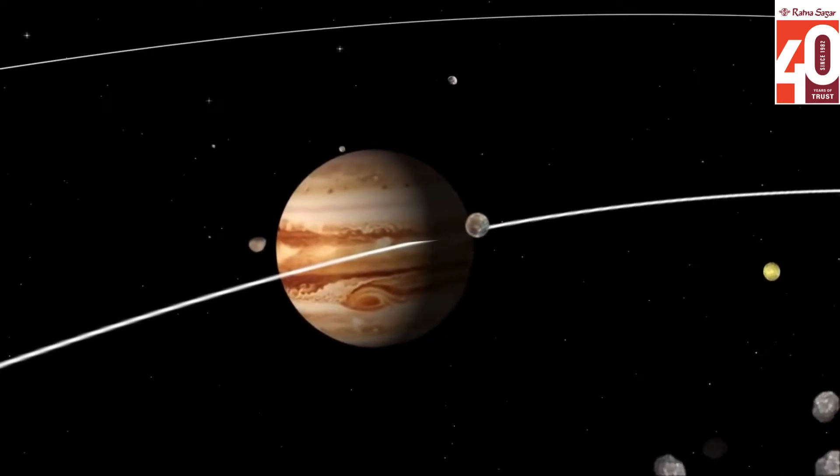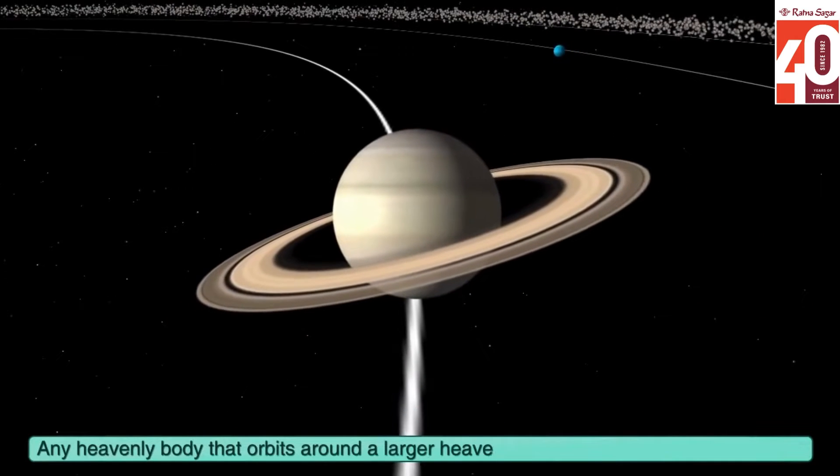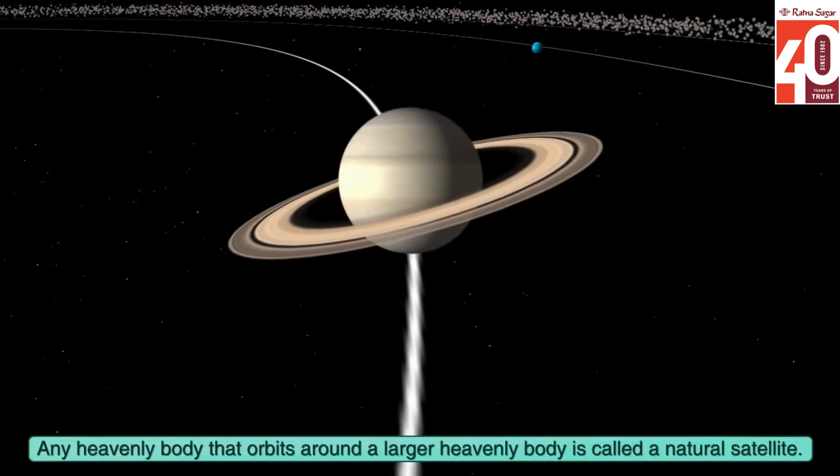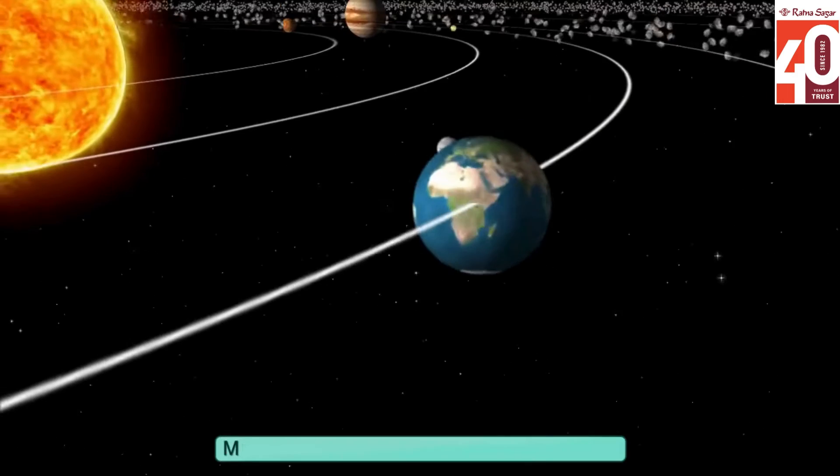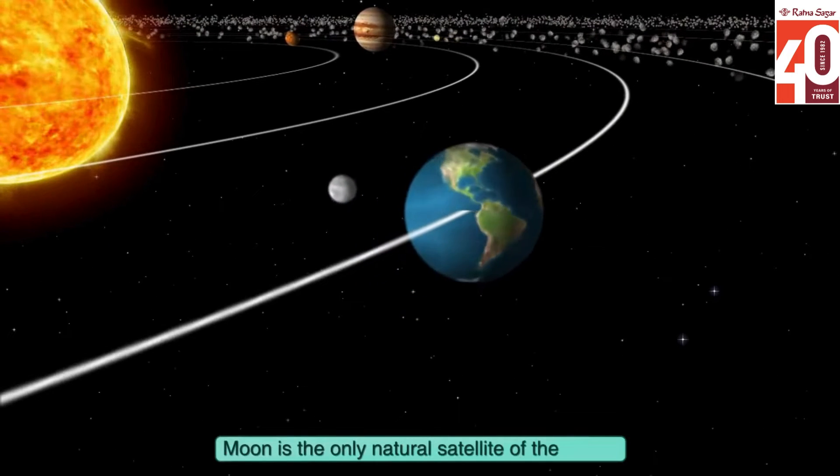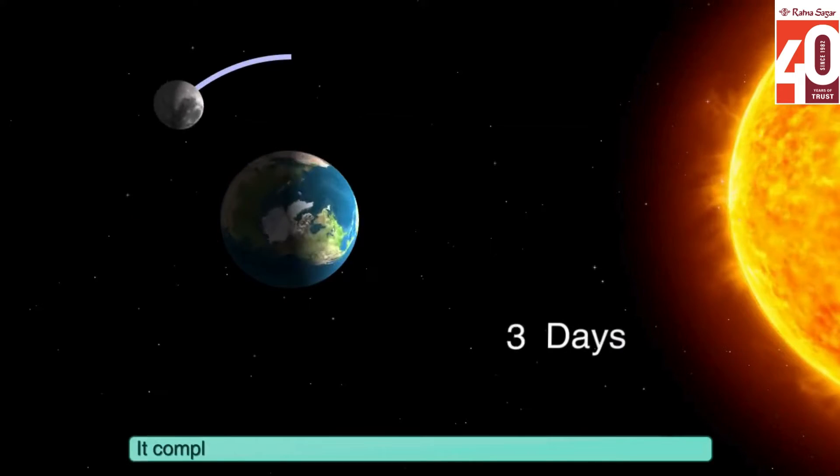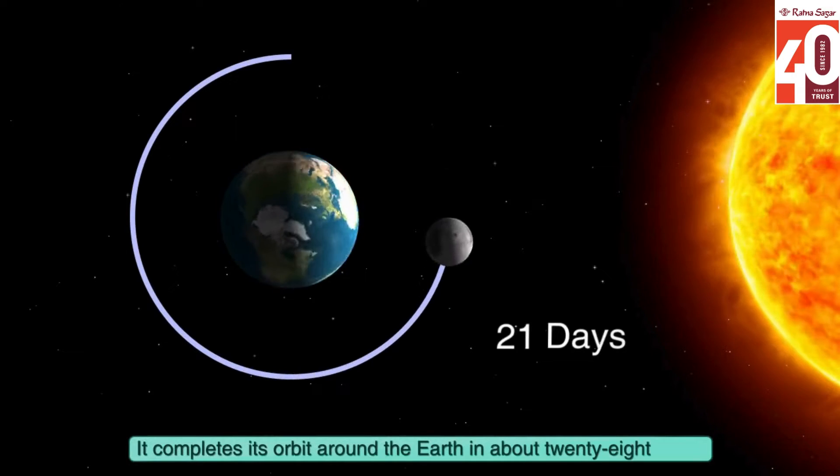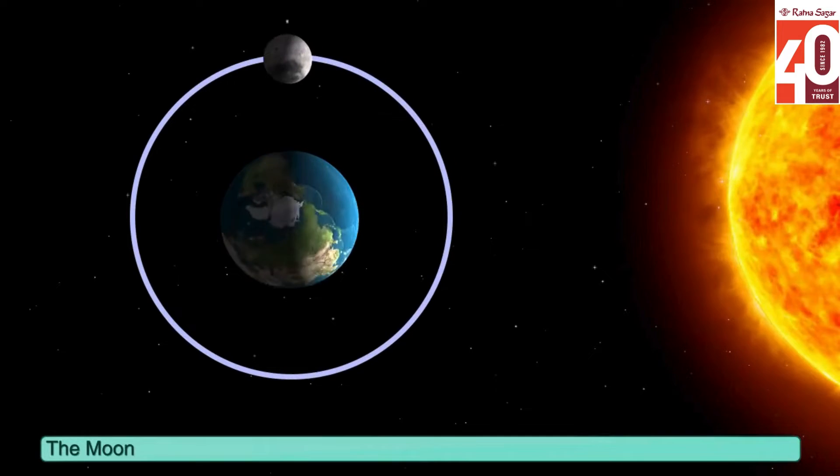Any heavenly body that orbits around a larger heavenly body is called a natural satellite. The moon is the only natural satellite of the Earth. It completes its orbit around the Earth in about 28 days. The moon also rotates on its axis and completes one rotation in about the same time.